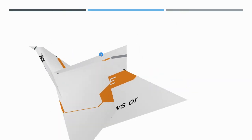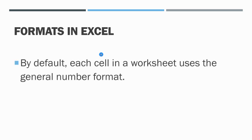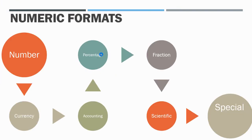After this, we will look at what formats are available in Excel. We work with numbers and text in Excel, and we can convert text to numbers and numbers to text. By default, each cell in a worksheet uses the General number format. Excel provides seven categories of numeric formats: Number, Currency, Accounting, Percentage, Fraction, Scientific, and Special.